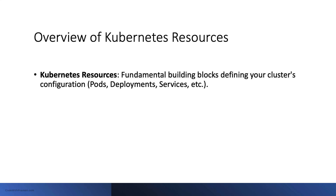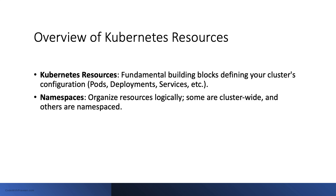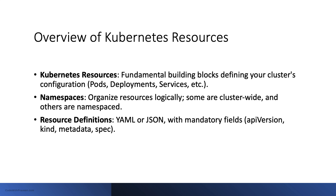These resources are defined as objects, which are abstract concepts in Kubernetes. Some objects are put into a namespace while others are available across the entire cluster. Kubernetes objects are described using YAML or JSON files, with YAML being the standard.